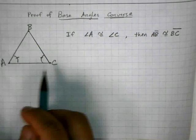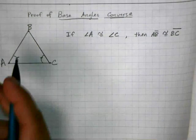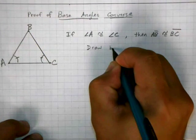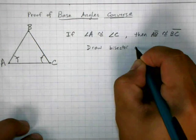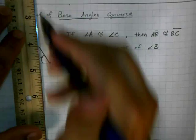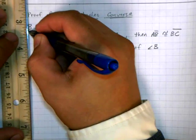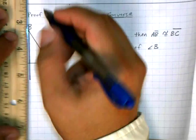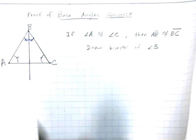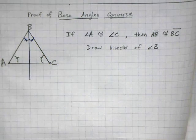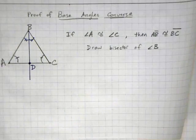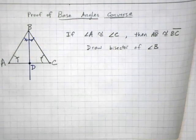So instead of finding the midpoint of AC, what I'm going to do is bisect angle B. So I'm going to draw a line down the middle here that's going to cut angle B in half, in other words, into two congruent angles. And I'm going to put a dot here and call this D. So where this bisector of angle B intersects AC, I'm going to call that point D.